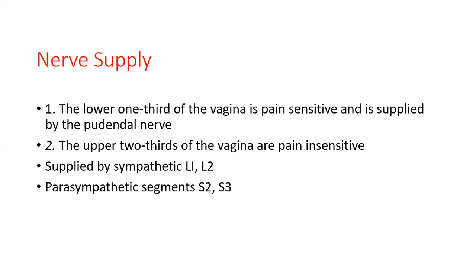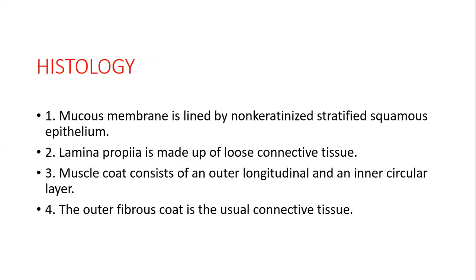Nerve supply: the lower one-third of the vagina is pain-sensitive and supplied by the pudendal nerve (somatic). The upper two-thirds are pain-insensitive, supplied by sympathetic (L1, L2) and parasympathetic (S2, S3) fibers. This is why during episiotomy, the pudendal nerve must be blocked with local anesthesia (xylocaine) before the incision. Histology: mucous membrane lined by non-keratinized stratified squamous epithelium, lamina propria of loose connective tissue, a muscular coat with outer longitudinal and inner circular layers, and an outer fibrous coat.